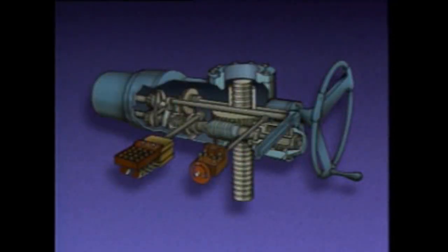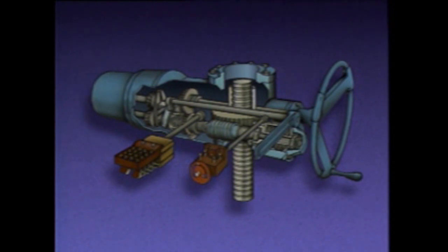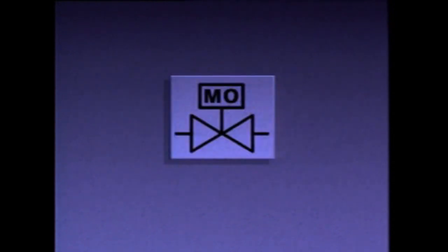Even though a motor operator consists of many different components, it's usually represented by a single symbol on a piping system diagram. This is one example of a symbol that may be used to represent a motor operator on a piping system diagram.